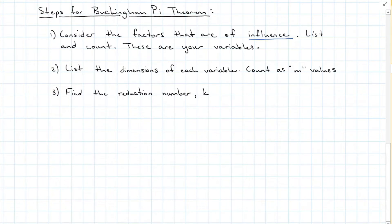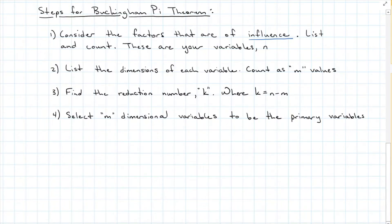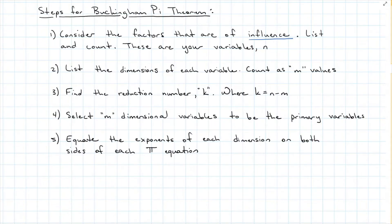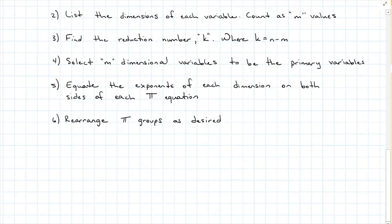Step three: find the reduction number k, where k is equal to n, your number of variables, minus m, your number of dimensions. Step four: select m number of dimensional variables to be the primary variables. Step five: equate the exponents of each dimension on both sides of the pi equation. And last, step six: rearrange the pi groups as desired.